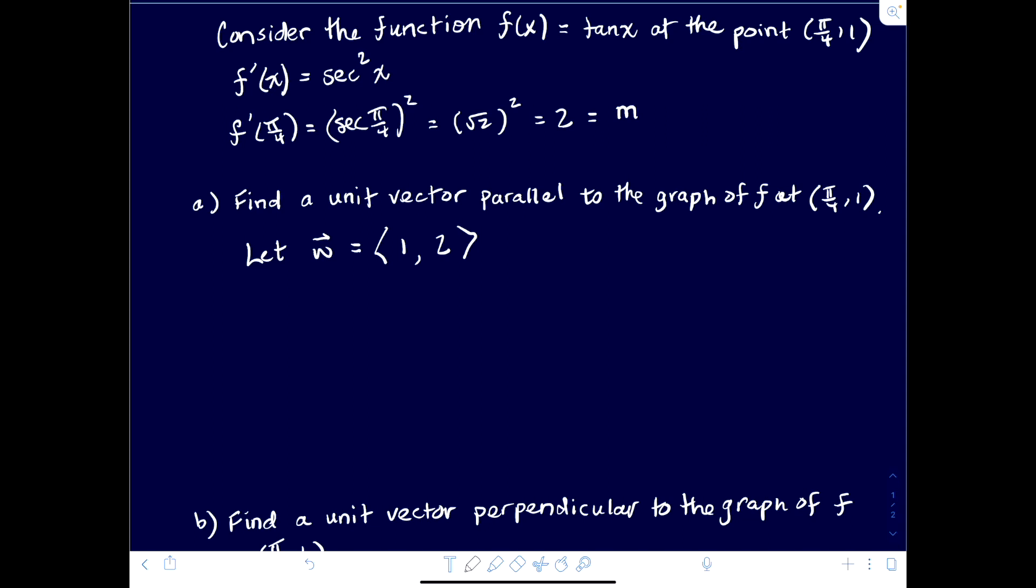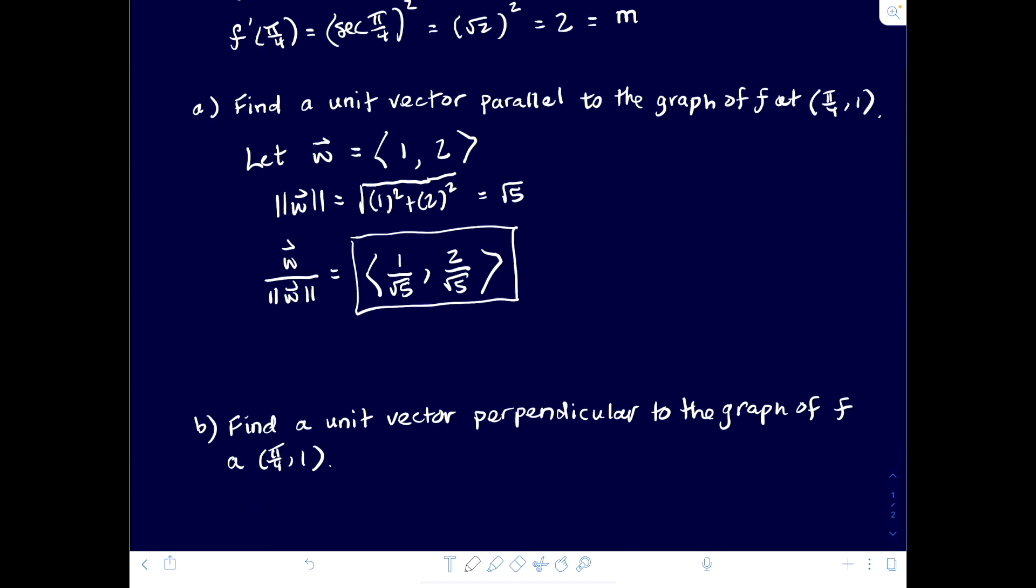So we need this to be a unit vector. If we have the magnitude of w, that's going to be the square root of 1² + 2² which is the square root of 5. And so our vector which is parallel to the graph of F at this given point would just be w divided by its magnitude, which will be the vector <1/√5, 2/√5>. And so that is our result.